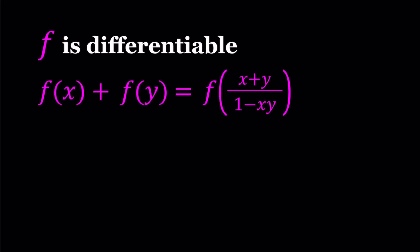Hello everyone. In this video, we're going to be solving a functional equation, a nice one. f is differentiable everywhere, and this function is from R to R. There are some exceptions — you can't use all values for x and y; you don't want to make x, y equal to 1 because that's going to be undefined. So f is differentiable, and we're going to use differentiation to solve this functional equation. I'll be presenting two methods, and let's start with the first one.